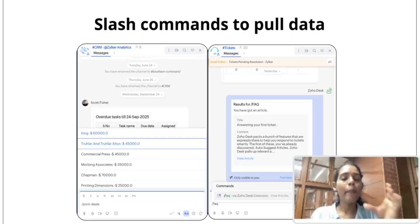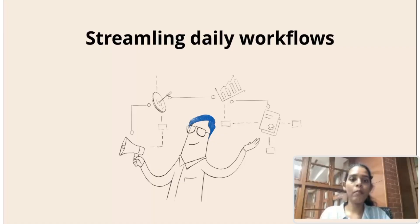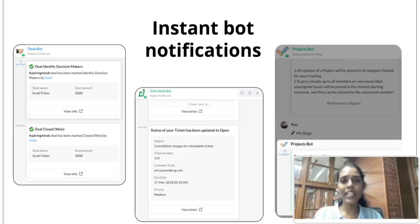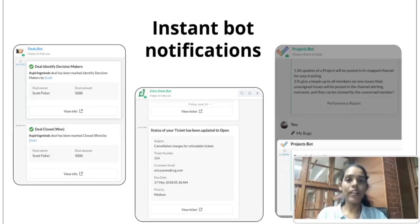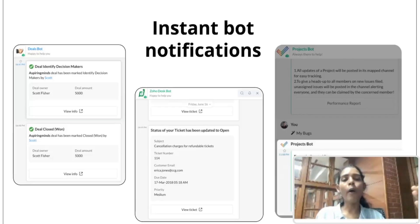Now let's look at how ZohoCliq helps streamline your daily workflows by bringing data from apps into ZohoCliq and helping you avoid bottlenecks. ZohoCliq provides instant bot notifications — there is a bot for every app in Zoho CRM Plus. With Zoho CRM, there's a Deal Bot: every time a deal is registered or updated, a bot notification is triggered in ZohoCliq. With Zoho Desk, a ticket notification is delivered by the Desk Bot. With the Projects Bot, you get updates on projects assigned to you, delayed projects, or any other project updates.